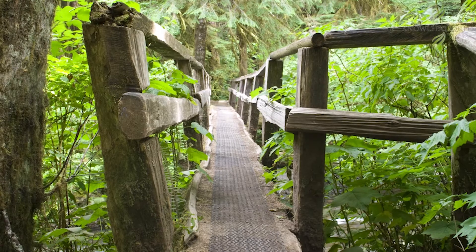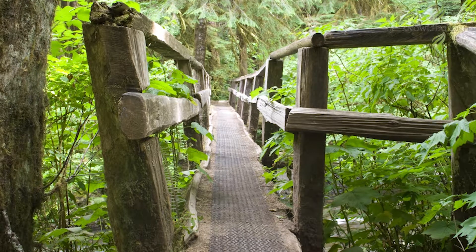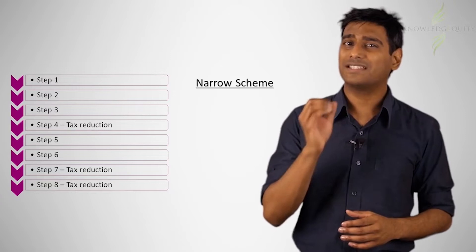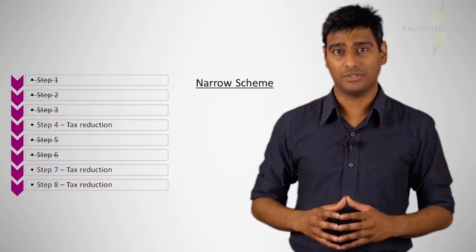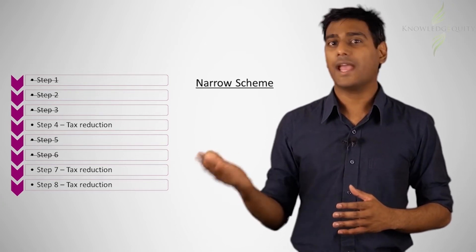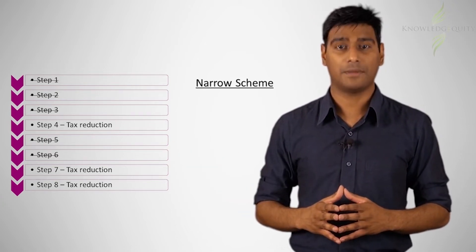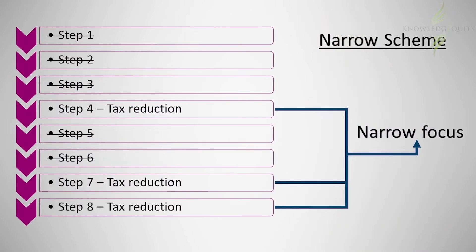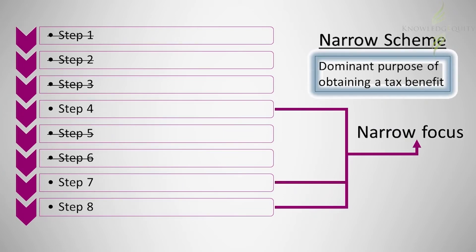One way the tax office could identify the scheme is in a narrow manner. The tax office could focus on the steps which were directly aimed at reducing tax, such as seeking the advice of an accountant, setting up the trust and distributing the trust profits to family members. If the scheme is identified narrowly in such a manner, then it will be easier to fulfill the third requirement of Part 4a, that the dominant purpose of entering into the scheme was to obtain a tax benefit. This is because the steps of narrowly identified schemes mainly comprise the tax minimization actions.